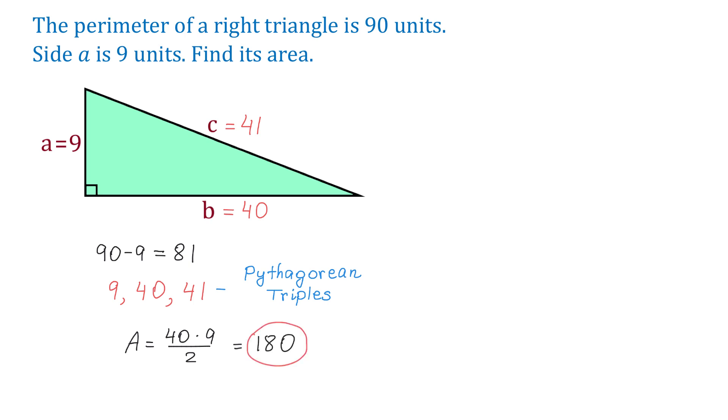Now if you want to see a more detailed solution, then keep watching. So if we start from the beginning, then the perimeter is the sum of the sides A, B, and C. In this equation, P is 90 and A is 9. Then if we subtract 9 from both sides, we will have 81 equals B plus C. Then if we subtract B from both sides, we will have that 81 minus B equals C.